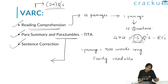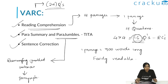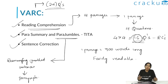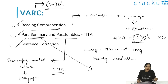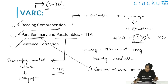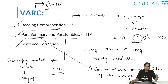Coming to para-jumbles — this involves rearranging jumbled sentences to form a coherent passage. You'll be given a set of sentences that are out of order and your task is to sequence them logically to prepare a meaningful paragraph. Most para-jumble questions are in the form of TITA questions. Para-summary, on the other hand, requires you to identify the central theme or main idea of the passage — you'll choose the best summary that captures the essence of the paragraph concisely.